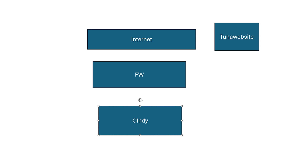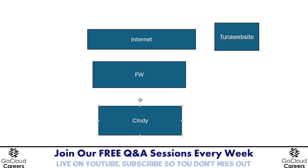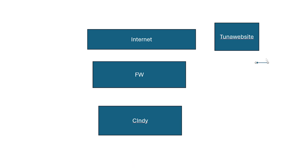Cindy is a TUNA connoisseur. She loves tuna, so she decides to take my credit card and go to the TUNA website to buy tuna. Cindy goes to her internet browser. Her computer sees a default route, which points to the firewall. The firewall NATs, or gives her a temporary public IP address to go to the internet, and creates a table entry that says Cindy the cat is going to the TUNA website. If it's an HTTP website, Cindy will send a SYN to open a connection, and the website will respond to Cindy's connection request and acknowledge the TCP connection.